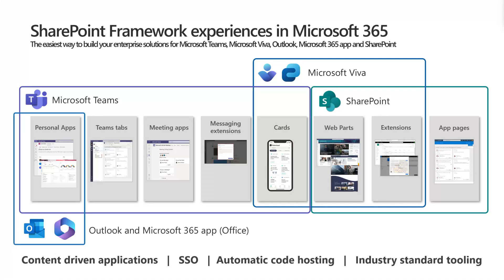We're also looking at extending SharePoint Framework to other Viva modules. As part of Ignite 2021 announcements, we announced SharePoint Framework availability for Outlook and Microsoft 365 as well. This means you can have one component and expose it in SharePoint, Microsoft Teams, Microsoft Viva, Outlook, and Microsoft 365. In your code, you're able to detect where you're being hosted — for example, if you're in Teams you can change your rendering logic, or render exactly the same. You'll have access to service-specific APIs through that model.